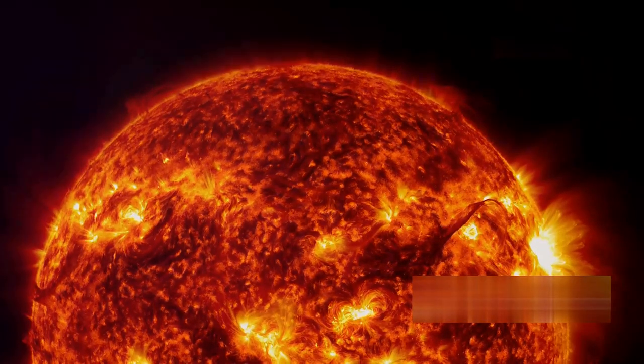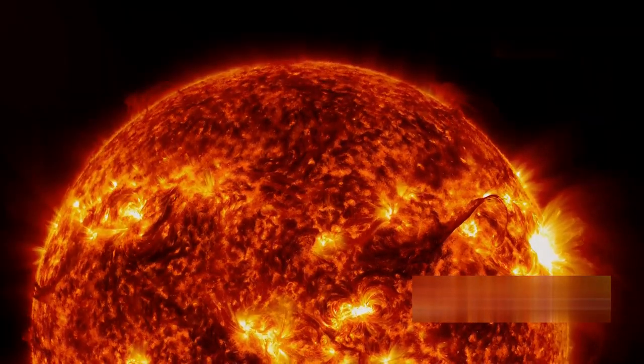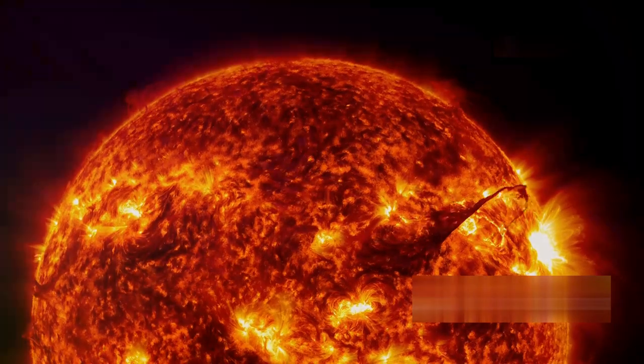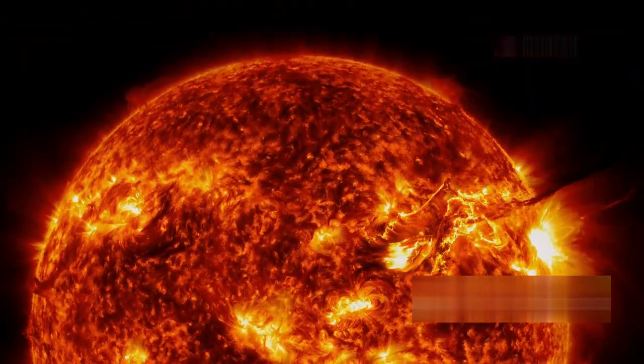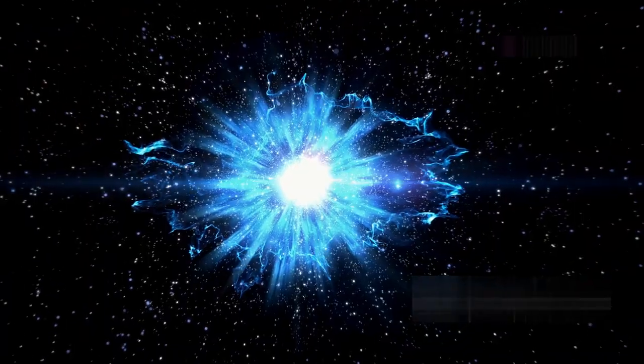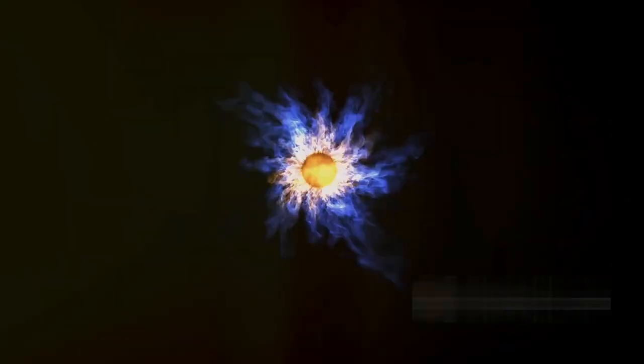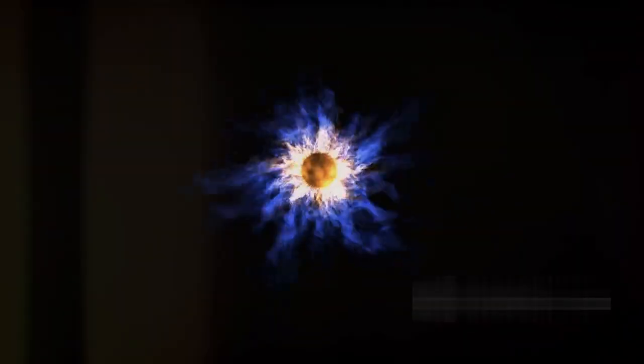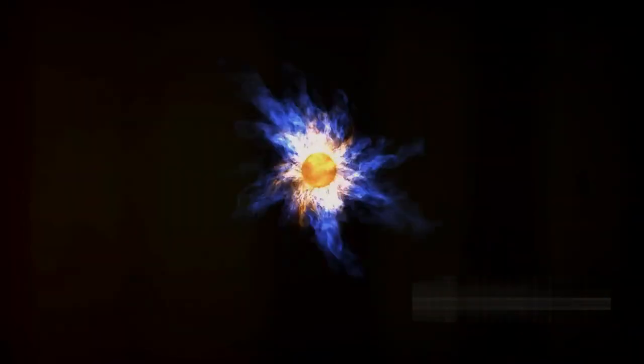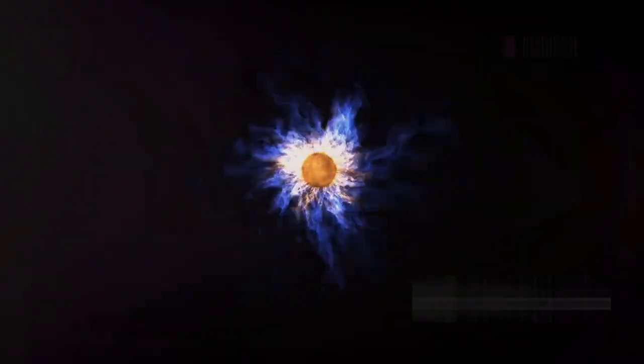The ionosphere, which is between 30 and 621 miles above the surface of our planet, is rich in electrically charged particles. When the BOAT hit Earth, it caused an impact comparable to a large solar flare, pushing the ionosphere to lower altitudes. If photons from a burst that occurred 1.24 billion light-years away can have this kind of effect on our planet, imagine what would happen if something like this occurred in our cosmic backyard.